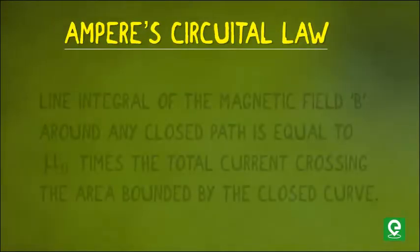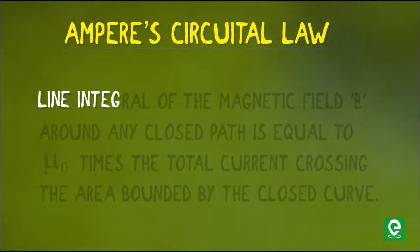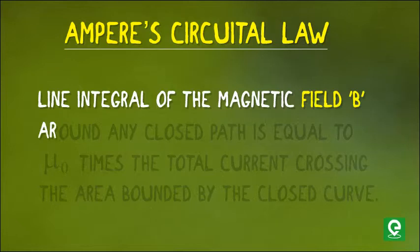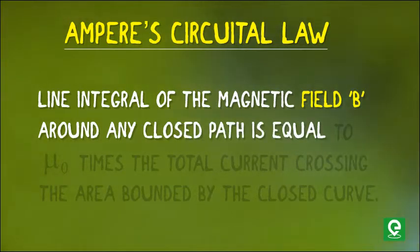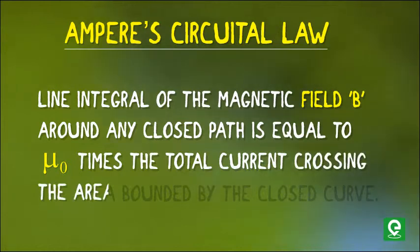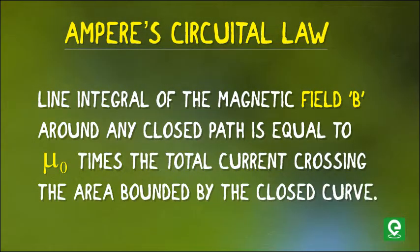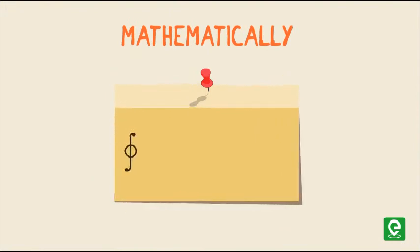Ampere's Circuital Law states that the line integral of the magnetic field B around any closed path is equal to μ₀ times the total current crossing the area bounded by the closed curve. Mathematically, ∮ B·dl = μ₀I_in.